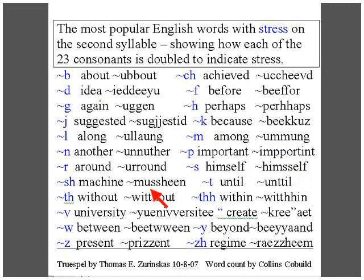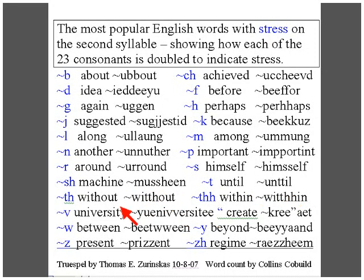You double the S because that's how you spell the consonant, and you double the first letter of the dual-letter consonant. 'Until.' 'Without.' Here's one that's a three-letter consonant and you double the first letter. So: 'within.'